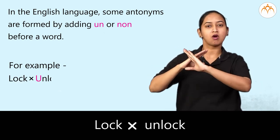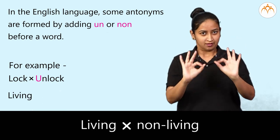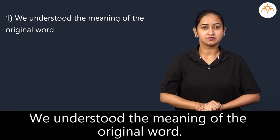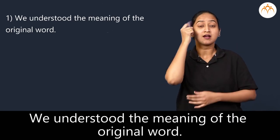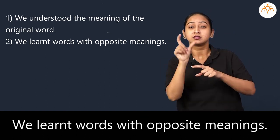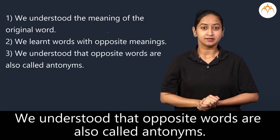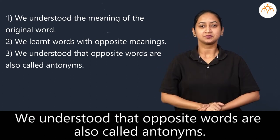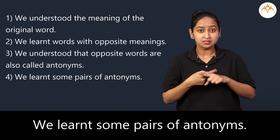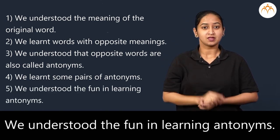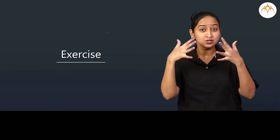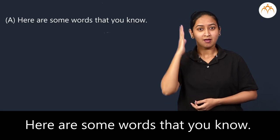For example: lock, unlock; living, non-living. What did we learn? We understood the meaning of the original word. We learnt words with opposite meaning. We understood that opposite words are also called antonyms. We learnt some pairs of antonyms. We understood the fun in learning antonyms.